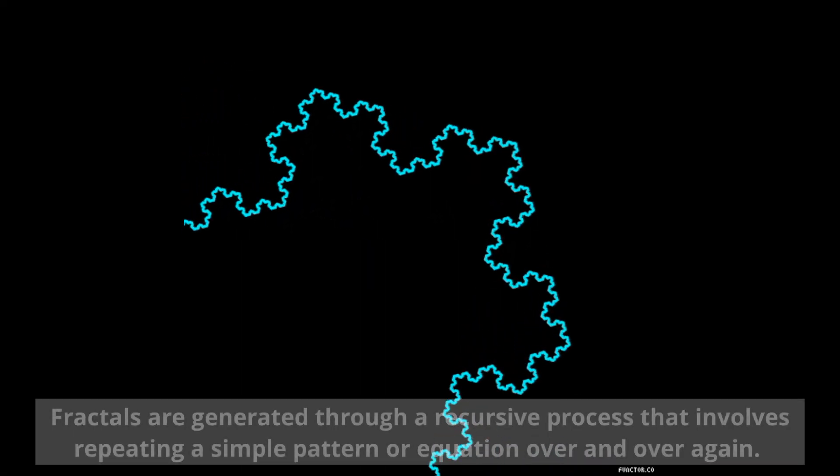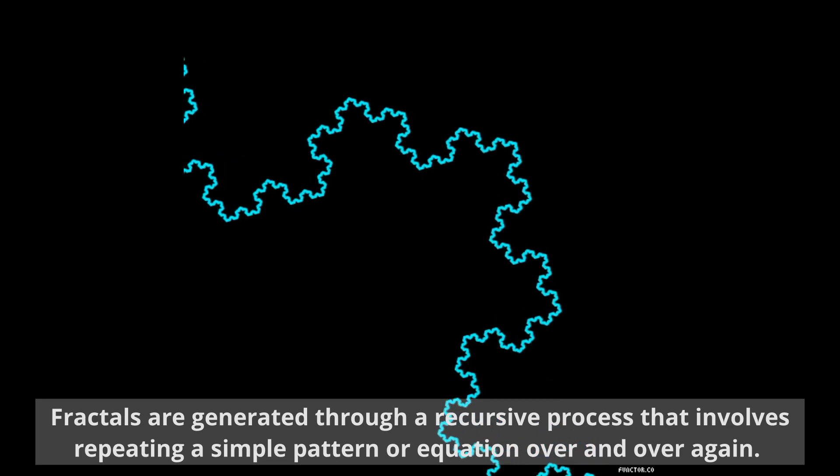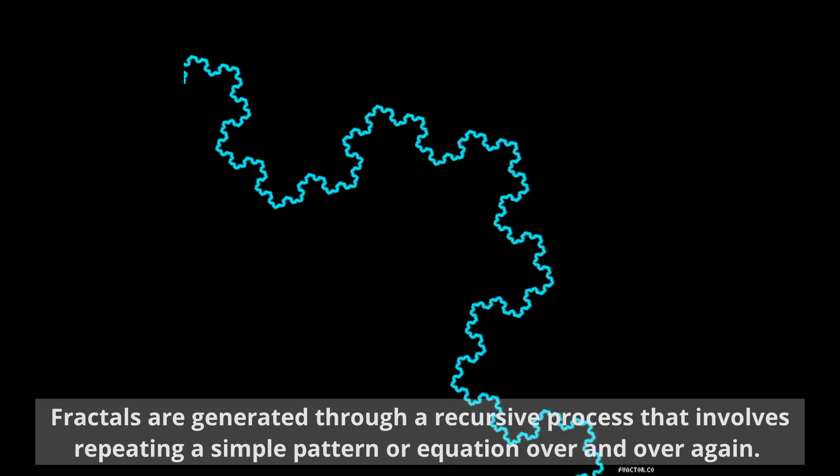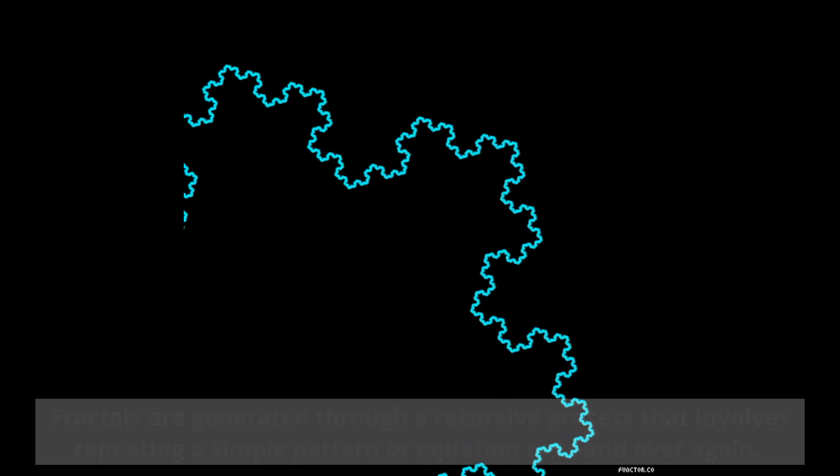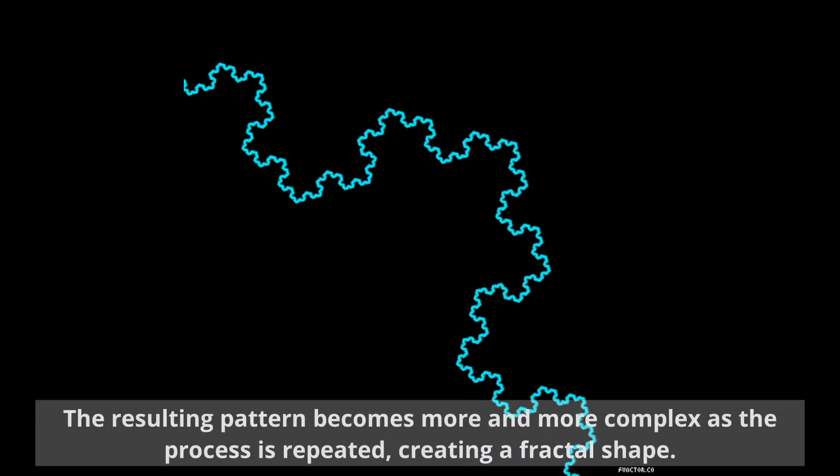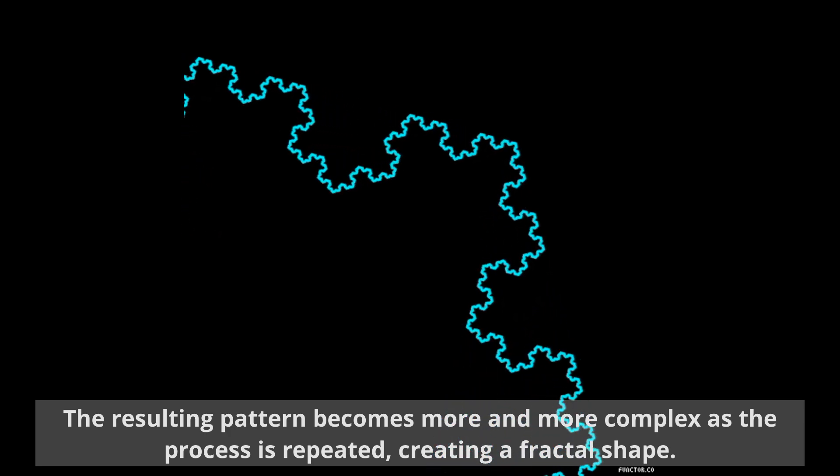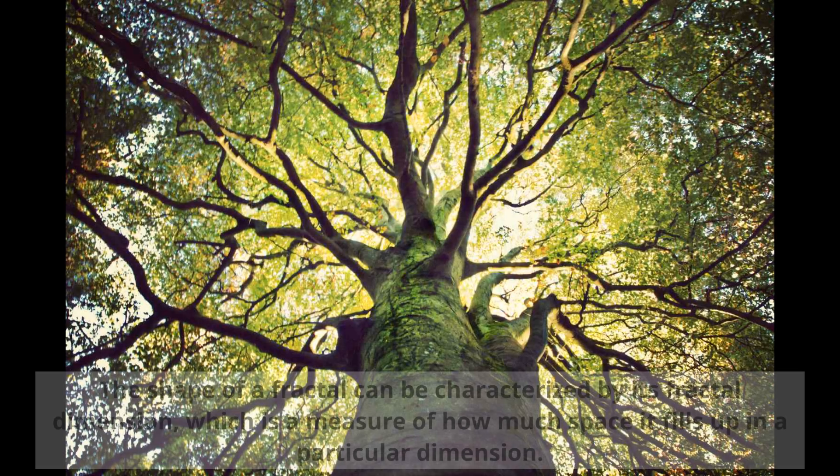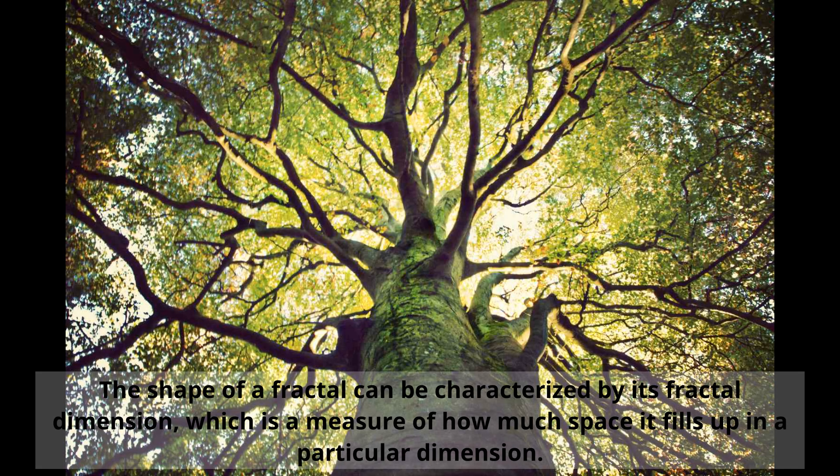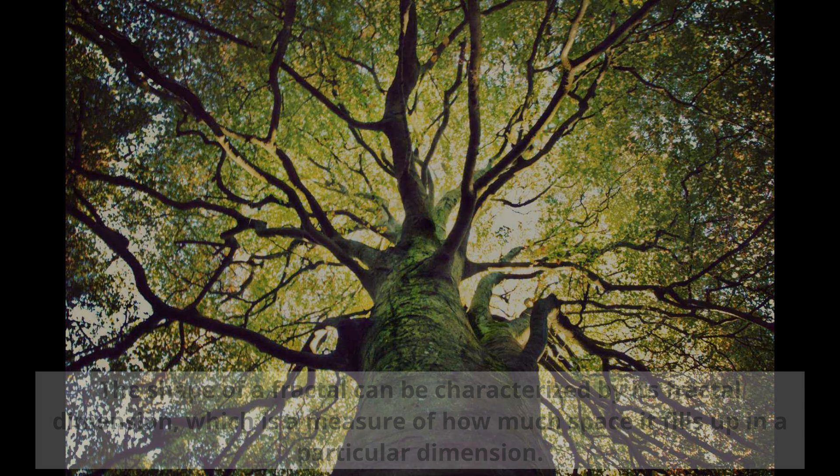Fractals are generated through a recursive process that involves repeating a simple pattern or equation over and over again. The resulting pattern becomes more and more complex as the process is repeated, creating a fractal shape. The shape of a fractal can be characterized by its fractal dimension, which is a measure of how much space it fills up in a particular dimension.